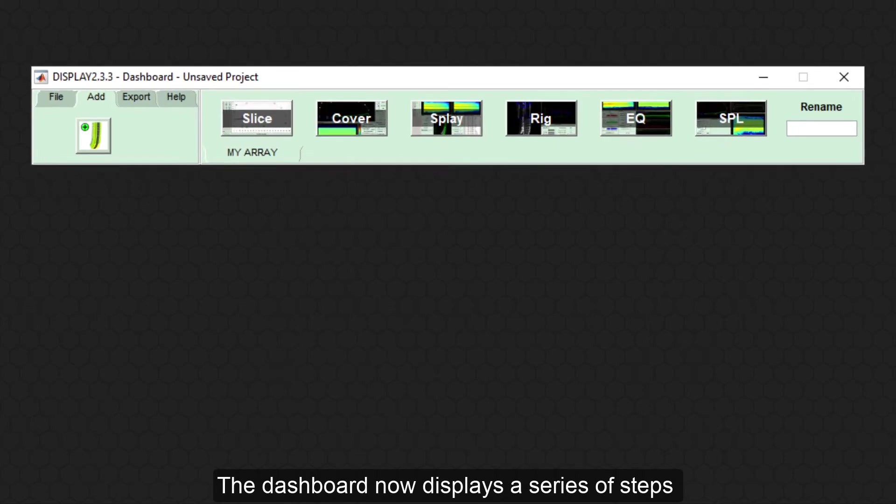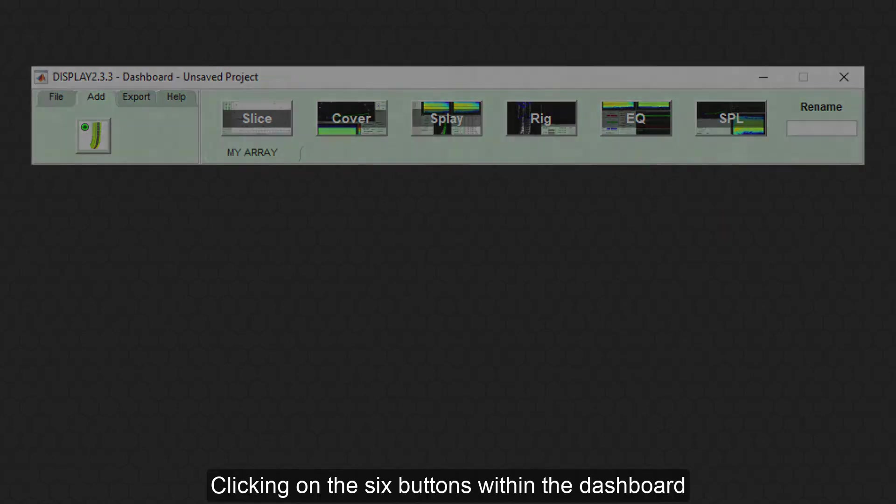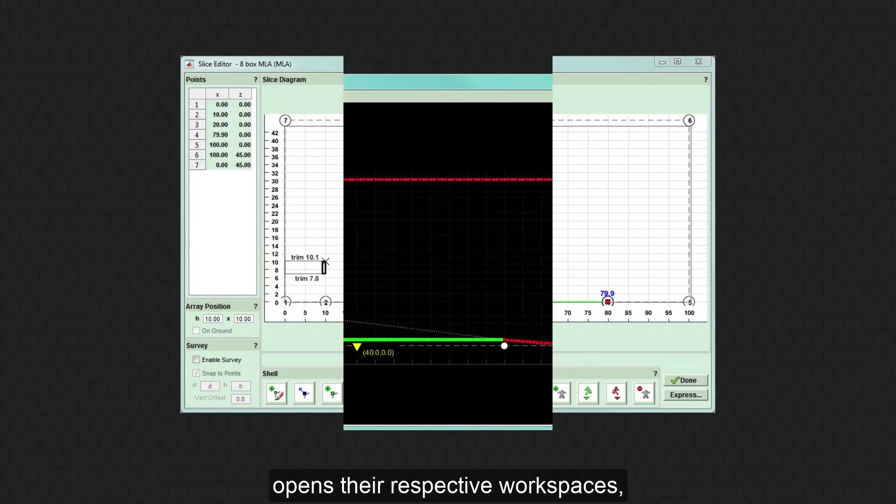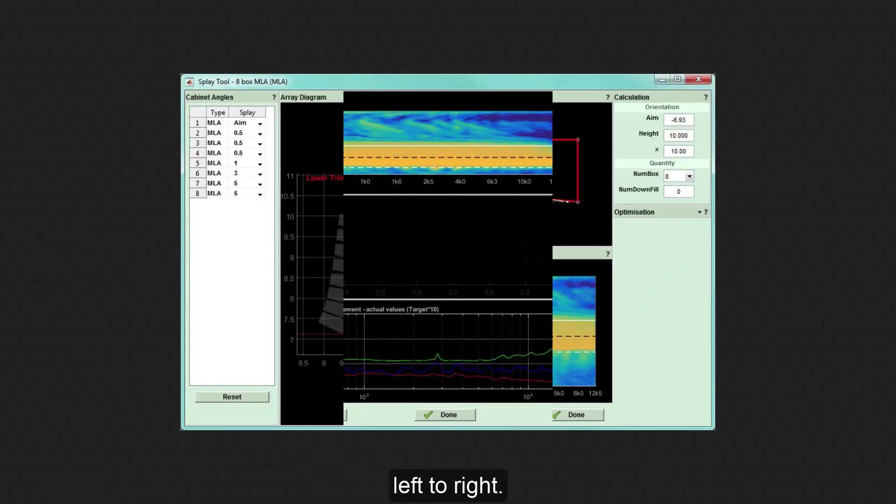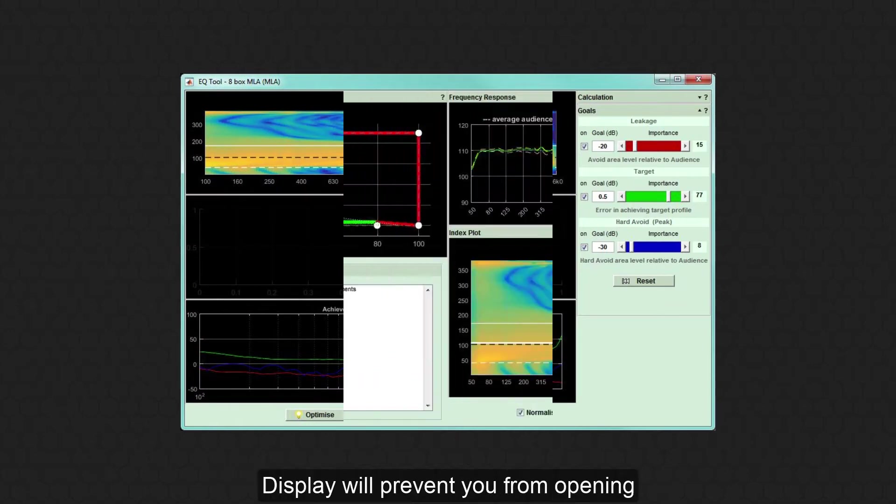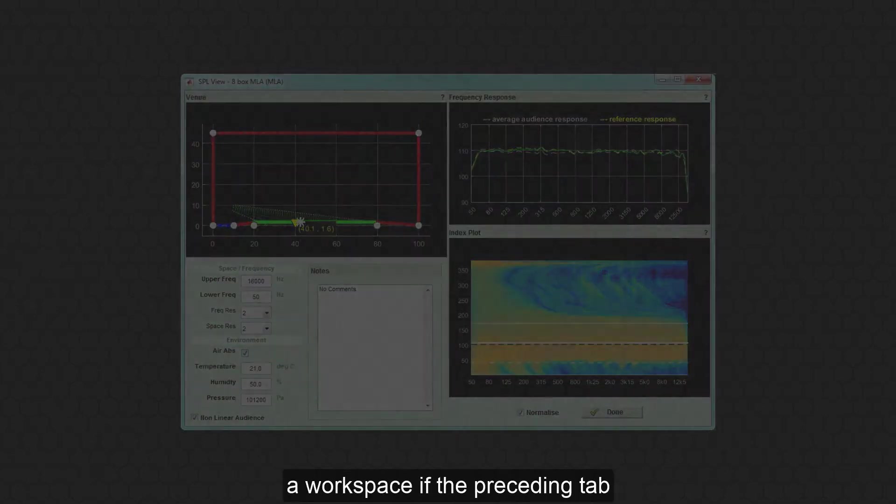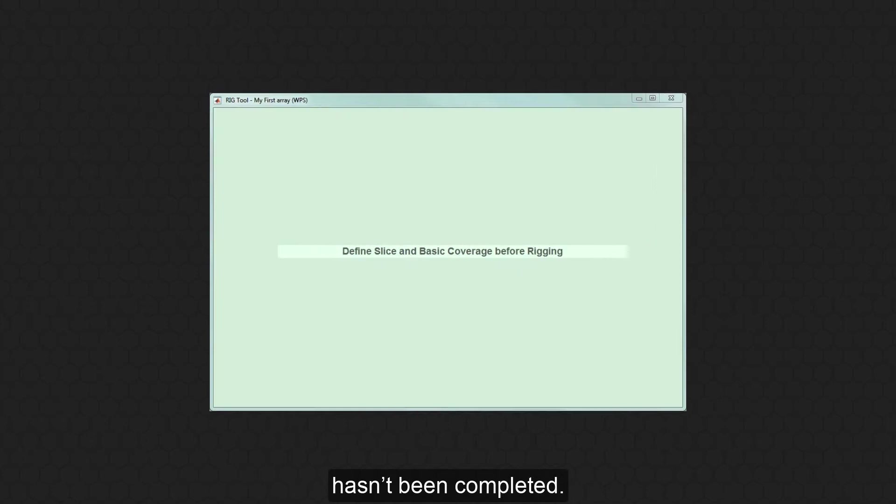The dashboard now displays a series of steps to follow in order to define the array preset. Clicking on the six buttons within the dashboard opens their respective workspaces, but these need to be run in a logical workflow left to right. Display will prevent you from opening a workspace if the preceding tab hasn't been completed.